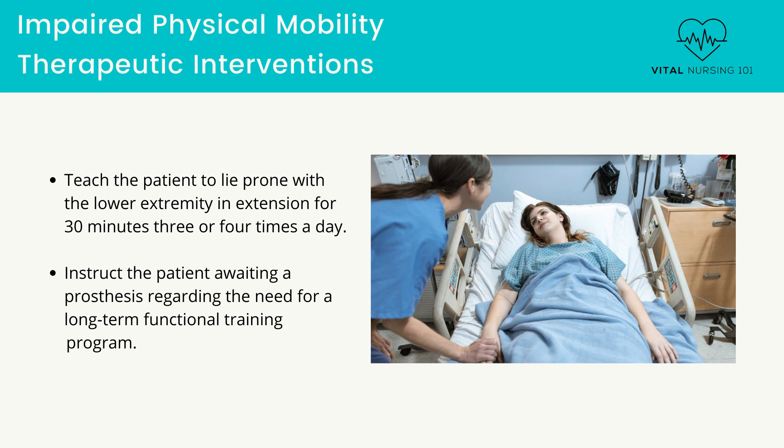Instruct the patient awaiting a prosthesis regarding the need for a long-term functional training program. It may take several months for the lower extremity to reach a point at which a final device may be fitted. This period allows the patient to adapt progressively to wearing a prosthesis and to work toward regaining function of the remaining limb.